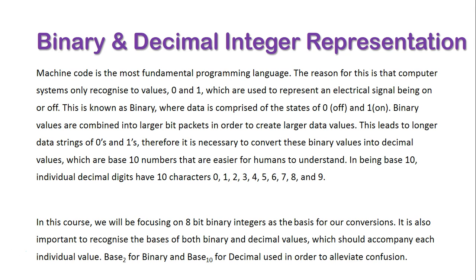This is known as binary, where data is comprised of two states, 0 representing off and 1 representing on. Binary values are combined into larger bit packets in order to create larger data values. This leads to longer data strings of 0s and 1s. Therefore it is necessary to convert these binary values into decimal values, which are base 10 numbers that are easier for humans to understand.